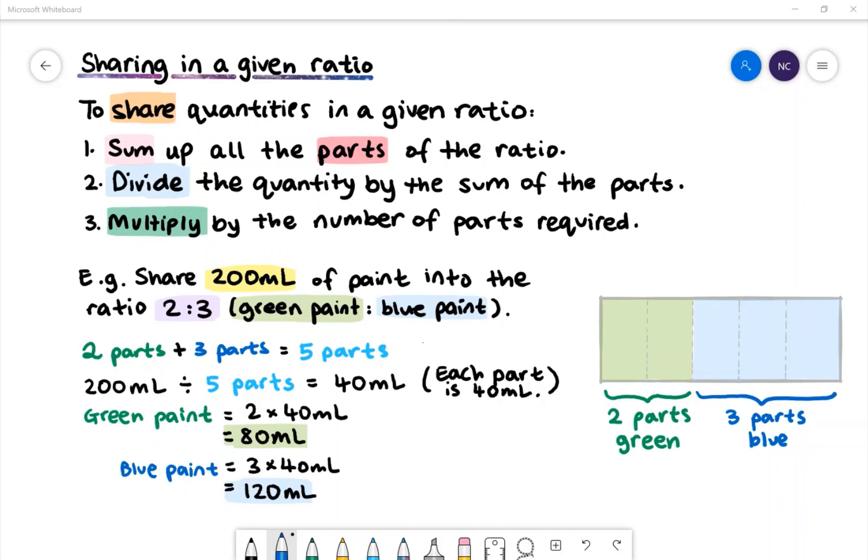Green paint is 2 parts of the ratio. We can do 2 multiplied by 40 milliliters to get 80 milliliters of green paint. Blue paint is 3 parts of the ratio. 3 multiplied by 40 milliliters gives us 120 milliliters. We will need 120 milliliters of blue paint.